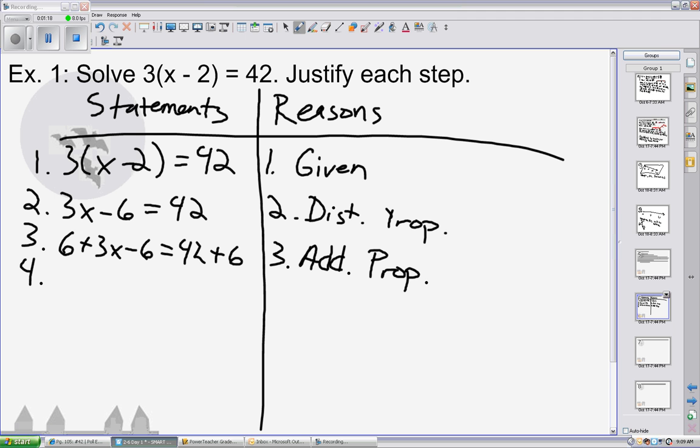Now, the next step is sometimes complicated. We would get 3x equals 48. The justification for this is the substitution property. Because instead of writing 42 plus 6, we are now writing 48. Instead of writing 6 plus 3x minus 6, we are now substituting in the term just 3x.